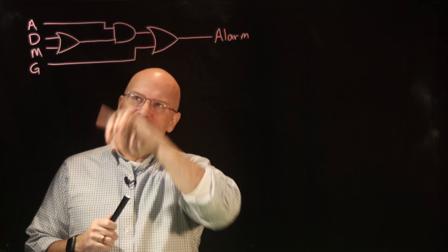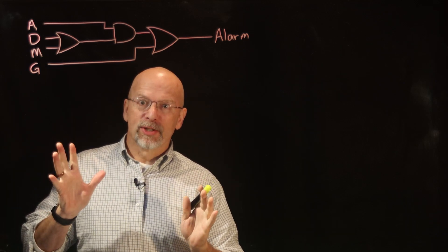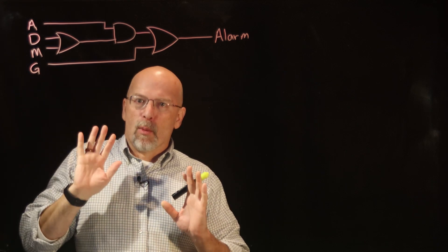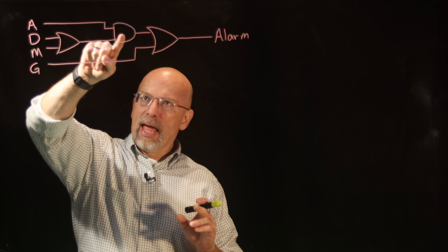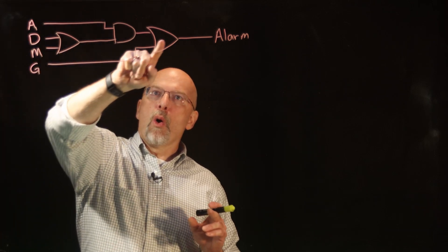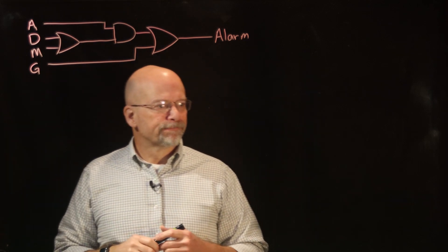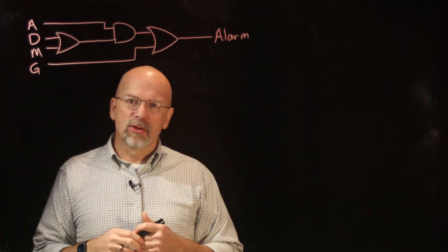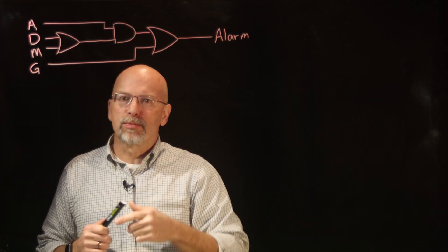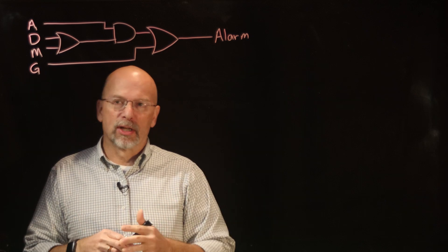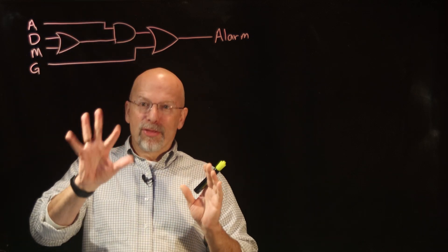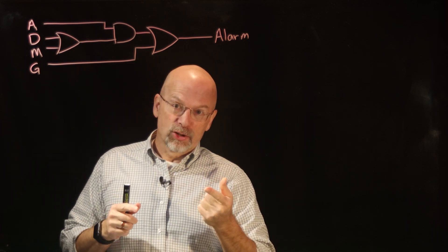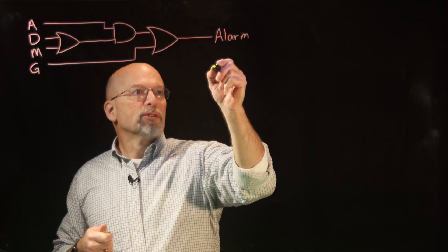In our last lesson we finished up with this circuit right here — it was supposed to be an alarm system. We had a classroom with a door open sensor, a motion detector, and a glass break detector. If the system is armed and the door is open, motion is detected, or glass is broken, we set off the alarm. Now we're going to come up with the truth table to represent this circuit and generate the Boolean algebraic expression. By the end of this lecture we'll have three ways to represent the circuit: the circuit itself, the Boolean expression, and the truth table.